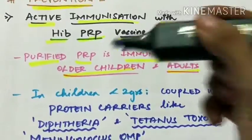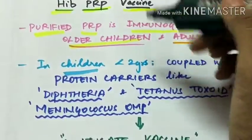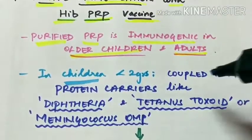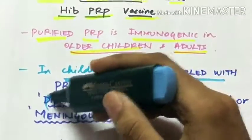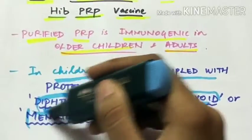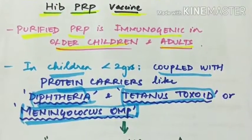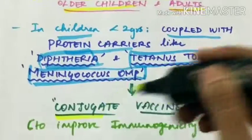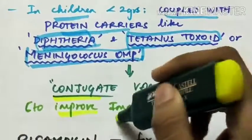But in children, the purified PRP is itself less immunogenic. So it is coupled with protein carriers like diphtheria, tetanus toxoid or meningococcus outer membrane protein. So this vaccine is called conjugate vaccine. This is given to improve the immunogenicity.